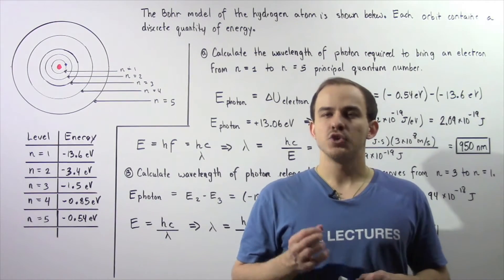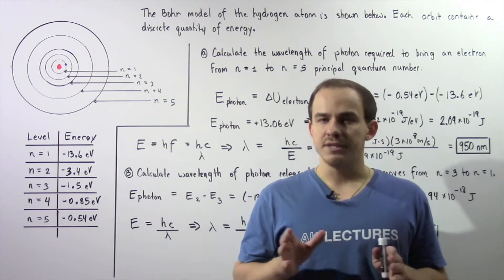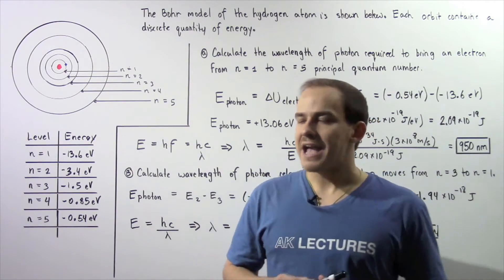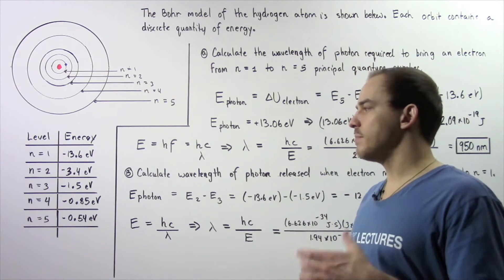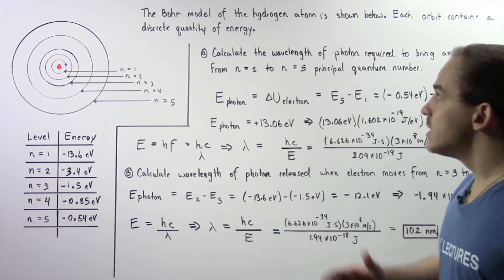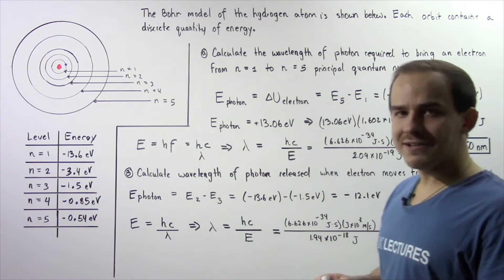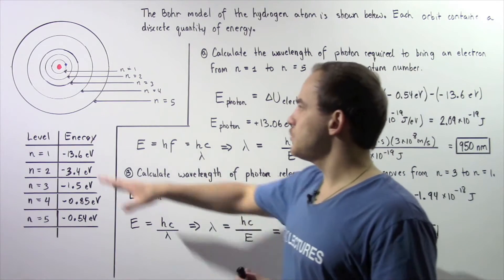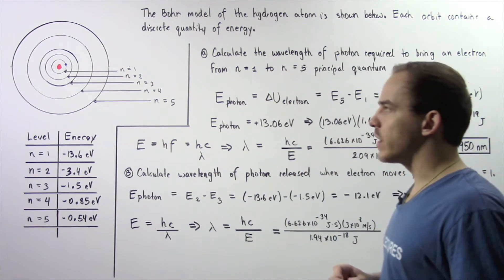In the previous lecture, we discussed the Bohr model. Now let's look at the following example that deals with that concept. The Bohr model of the hydrogen atom is shown in the following diagram.